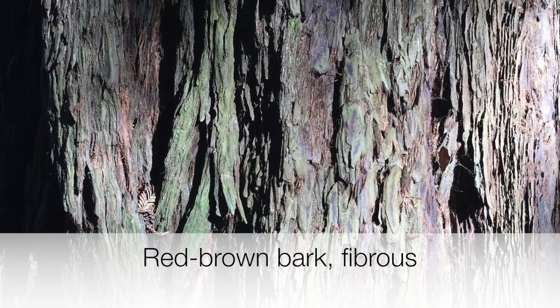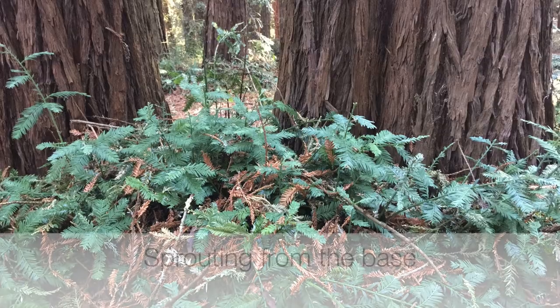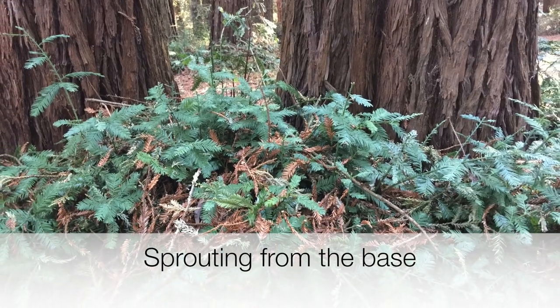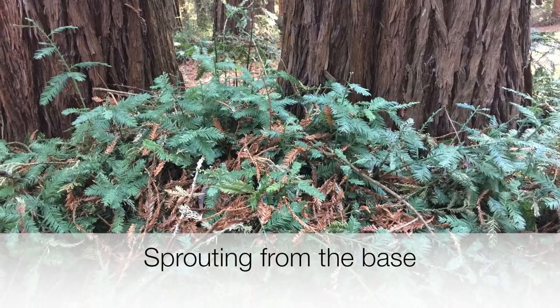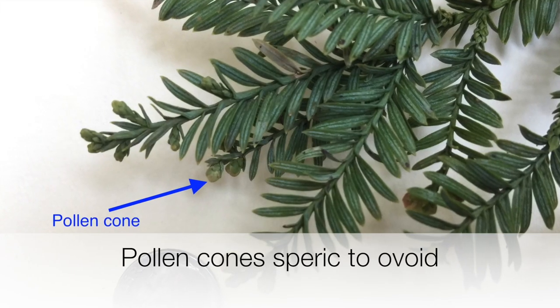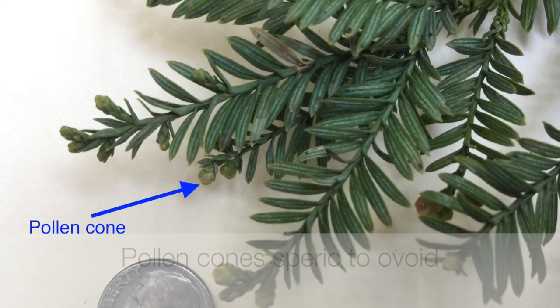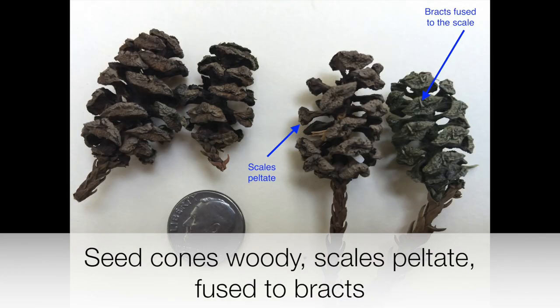The bark is reddish-brown and fibrous. Trees can sprout from the base even if cut or burned. Pollen cones are small and spheric to ovoid. The seed cones are woody with peltate scales that are fused to the bracts.